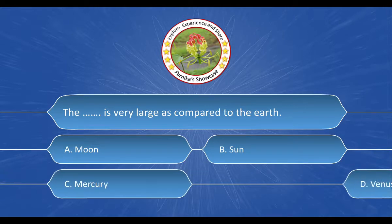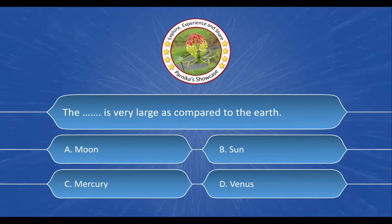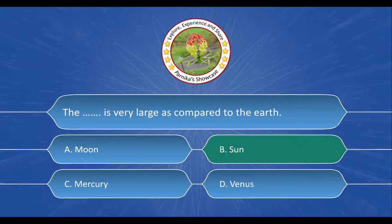The Sun is very large as compared to the Earth. And the options are: A. Moon, B. Sun, C. Mercury, D. Venus. And the correct answer is option B. Sun.